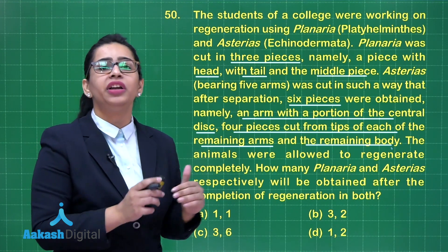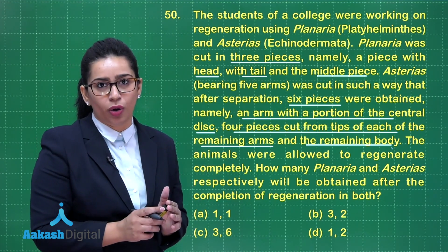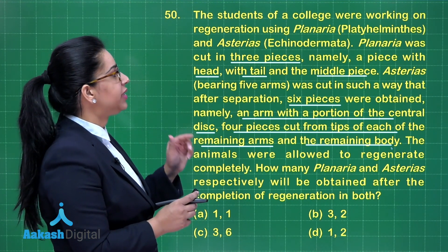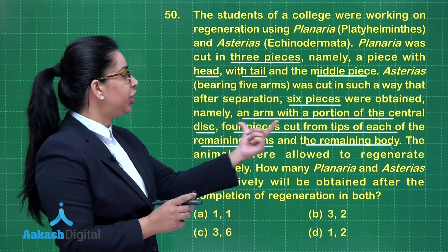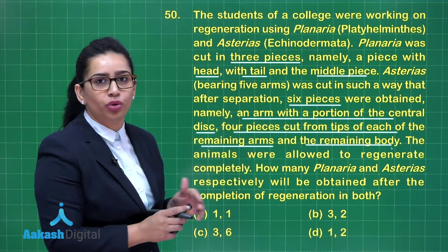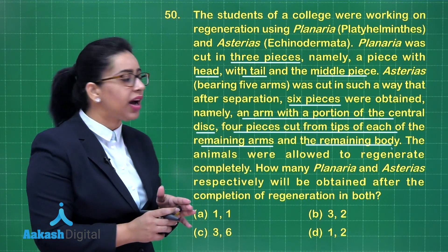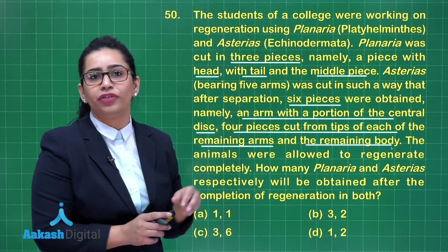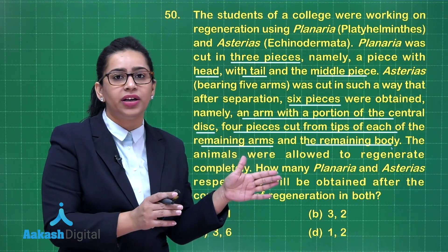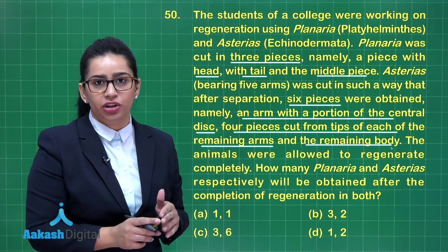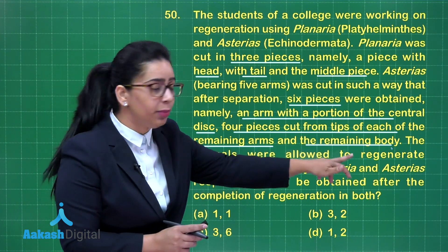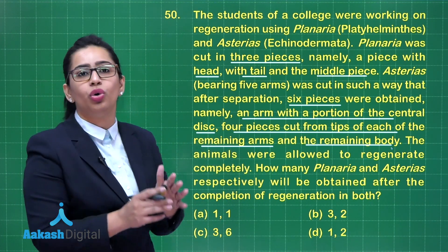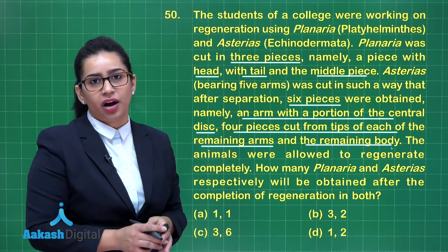When planaria is cut into 3 parts, each part will regenerate into an individual planaria organism. When we talk about starfish, the piece having a portion of central disc along with an arm will regenerate into 1 starfish. The 4 pieces cut from the tips of each arm, devoid of central disc, will not be able to regenerate. The last part, having the remaining body with the remaining central disc, will be able to regenerate into an individual starfish.